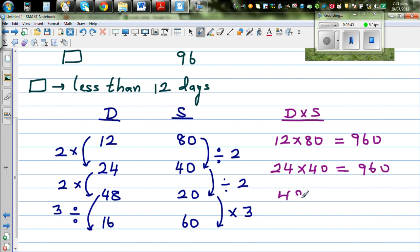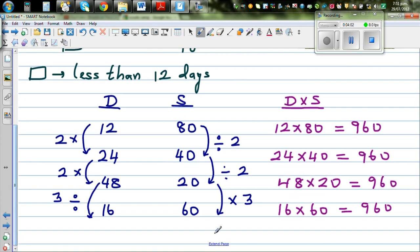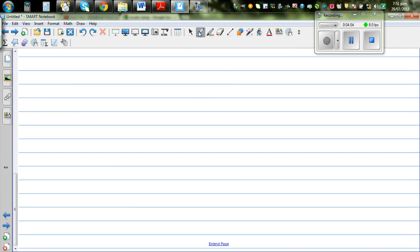48 times 20 is also 960. And 16 times 60, that's also 960. So this is a very interesting fact. The product, if it's an inverse proportion, the product of the quantities would be one constant number. Okay, so let's now deal with the question.